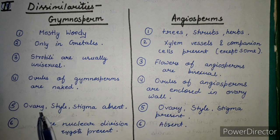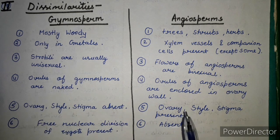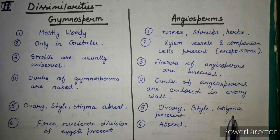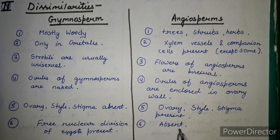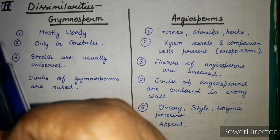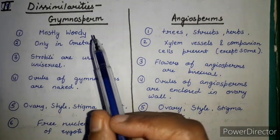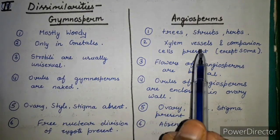In gymnosperms, ovary, style, and stigma are absent, whereas in angiosperms they are present. In gymnosperms, free nuclear division of the zygote takes place, whereas in angiosperms, free nuclear division does not take place. These are the dissimilarities between gymnosperms and angiosperms.